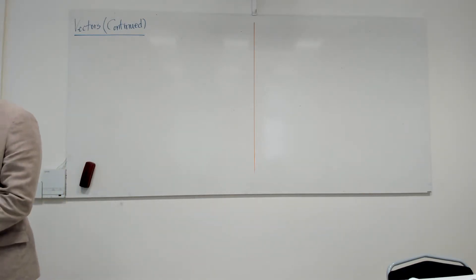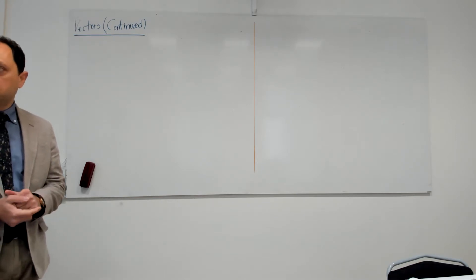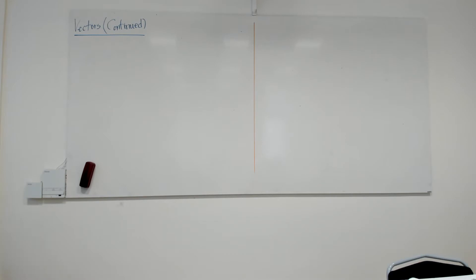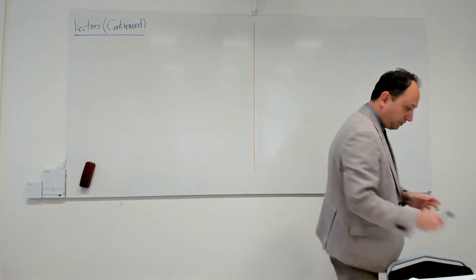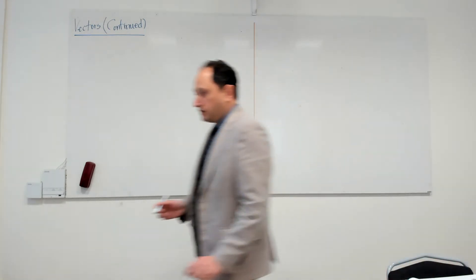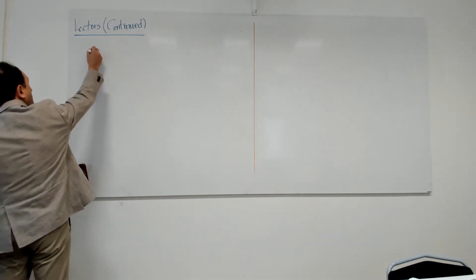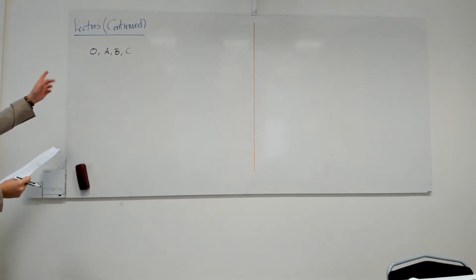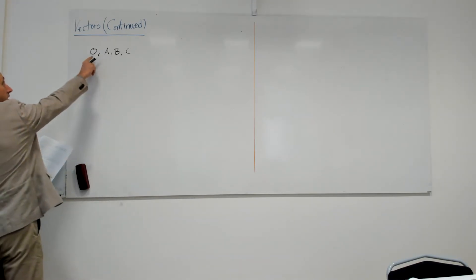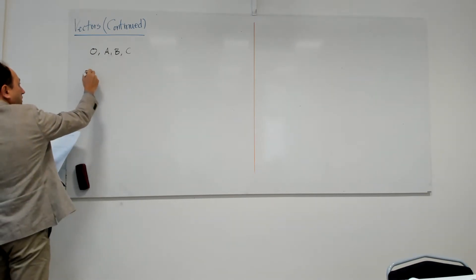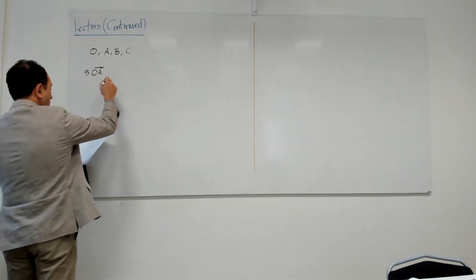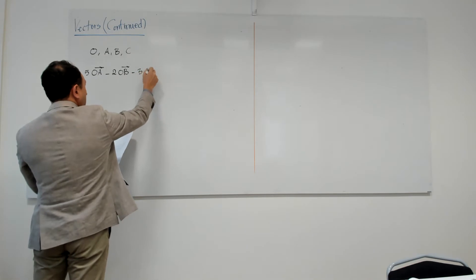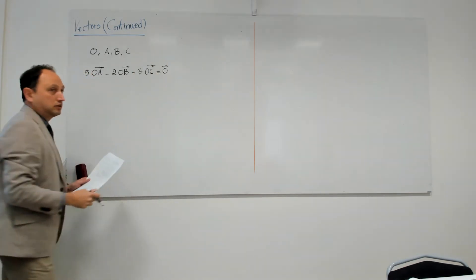Do you remember we talked about another operation between a number and a vector — multiplying a vector by a number? I solved a problem at the end, but I rushed through it. Let me remind you again: assume that someone gives us four points O, A, B, and C somewhere in space. We know that five times vector OA minus two times vector OB minus three times vector OC equals the zero vector.